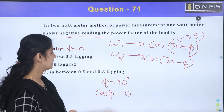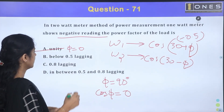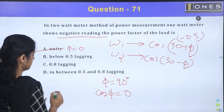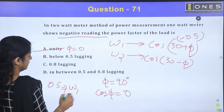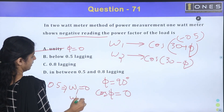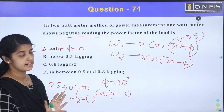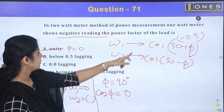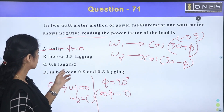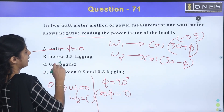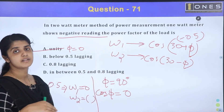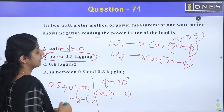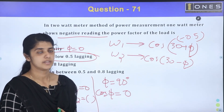So if cos φ is less than 0.5, W1 becomes negative. The power factor is below 0.5 lagging. That is the correct condition for one watt-meter to show a negative reading in the two watt-meter method.